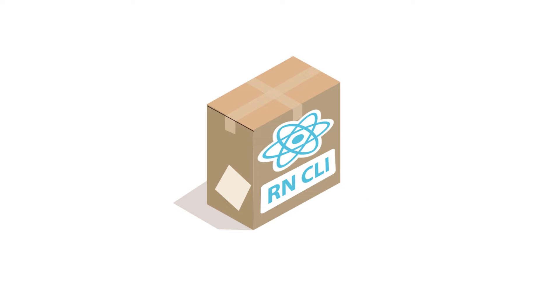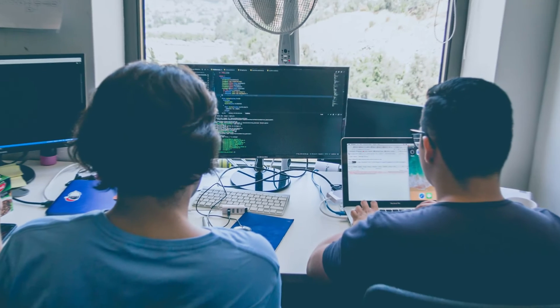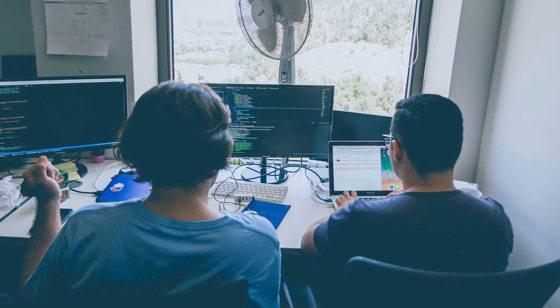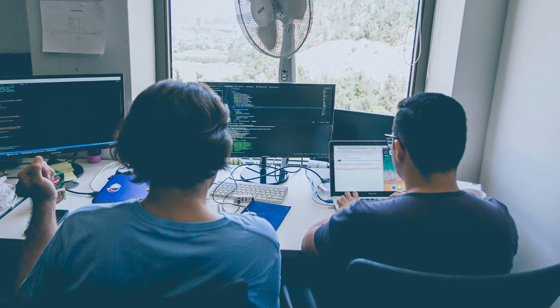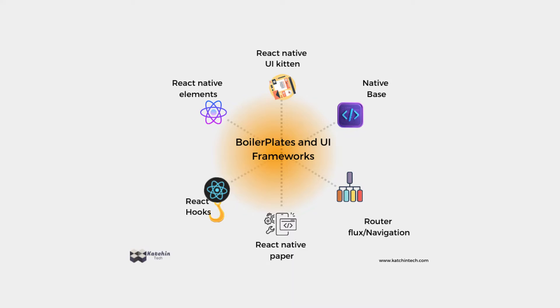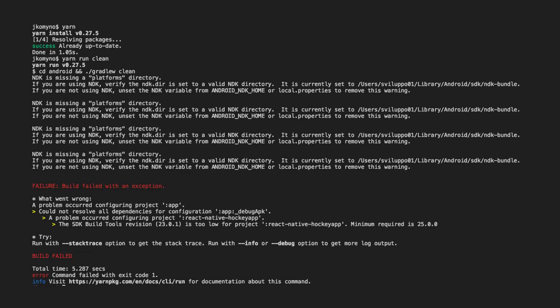On the other hand, we have React Native CLI, which stands for Command Line Interface. This is the traditional way of building React Native apps where you have more control over the native code and configurations. React Native CLI gives you access to the entire React Native ecosystem and allows you to integrate native modules and libraries directly into your projects.